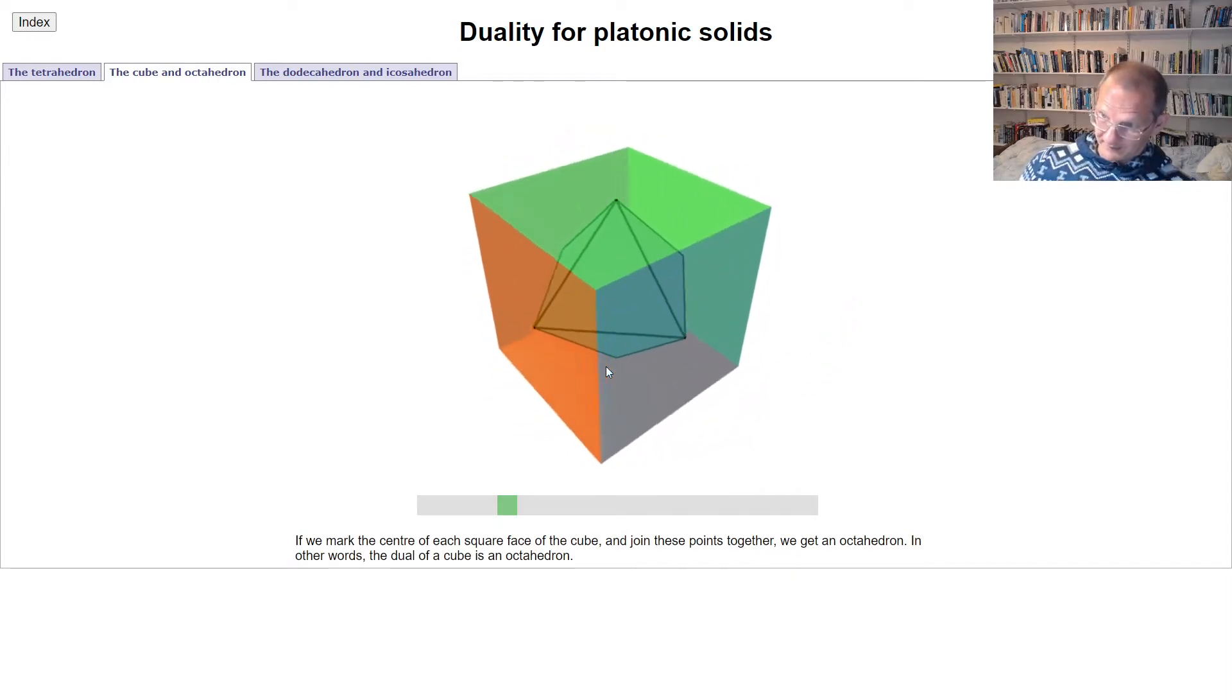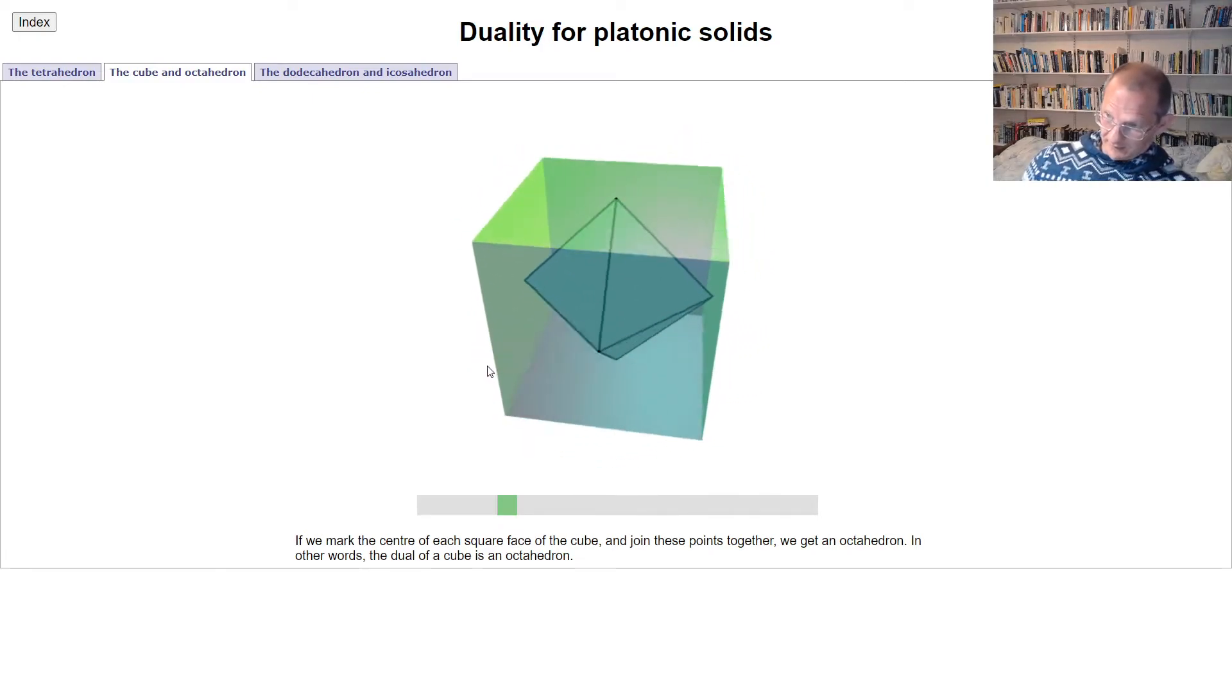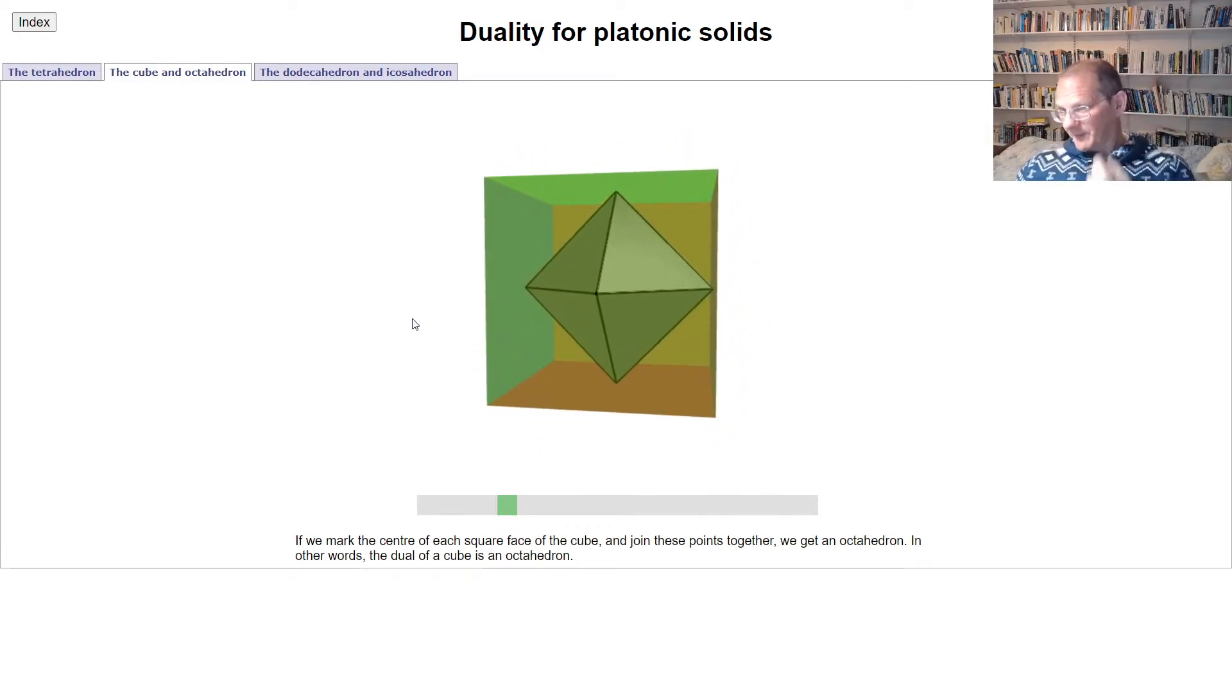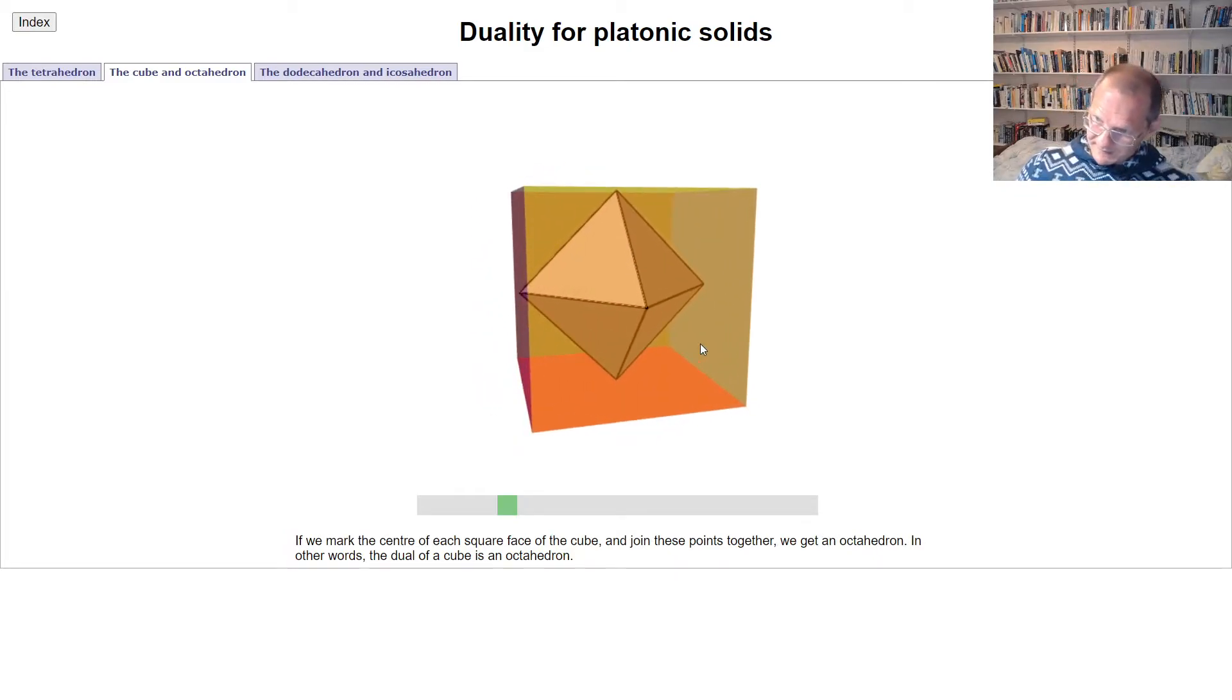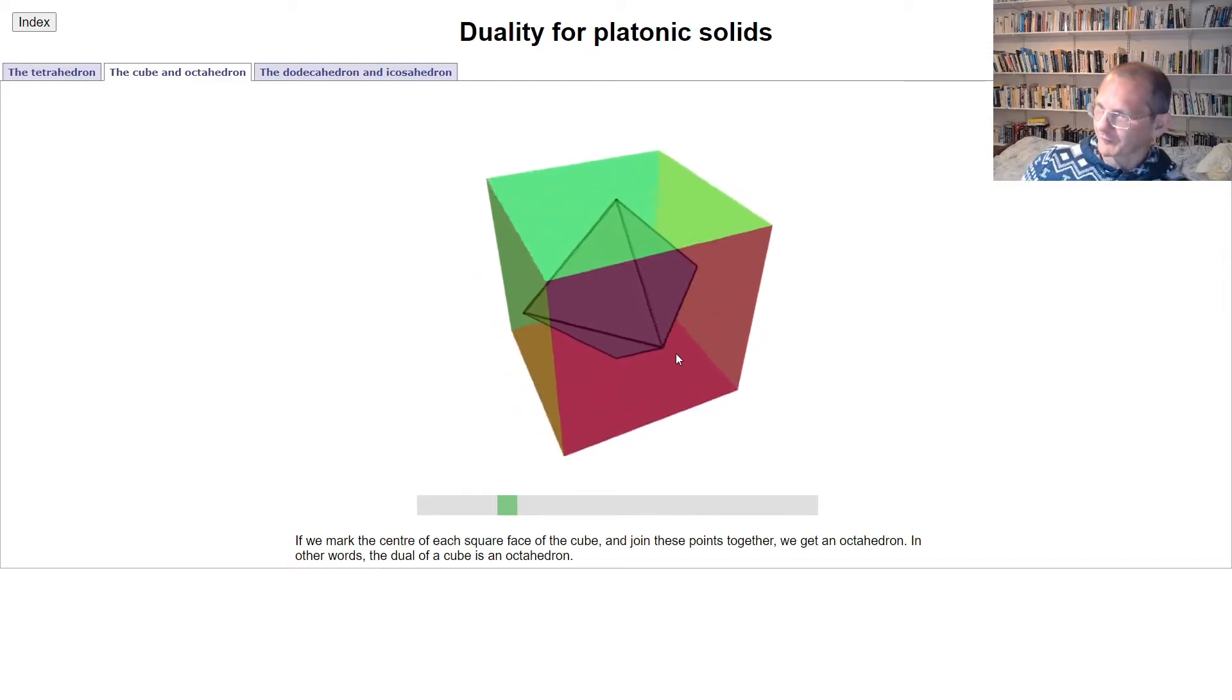So here we had, we started off with eight faces of the cube and we mark a central point there, and so that gives us eight points and so those become the eight vertices of this octahedron that we've got in the middle.